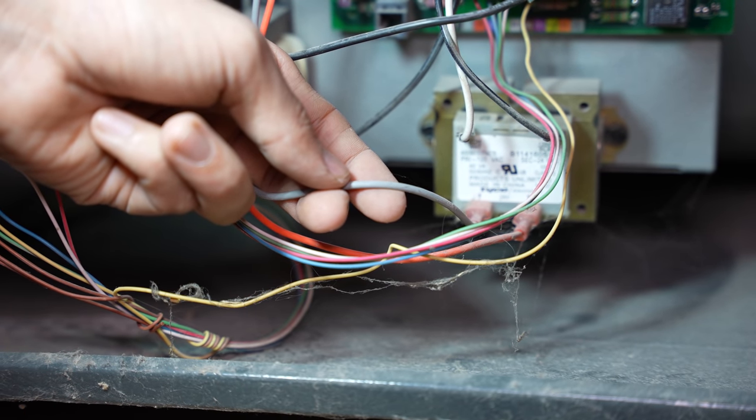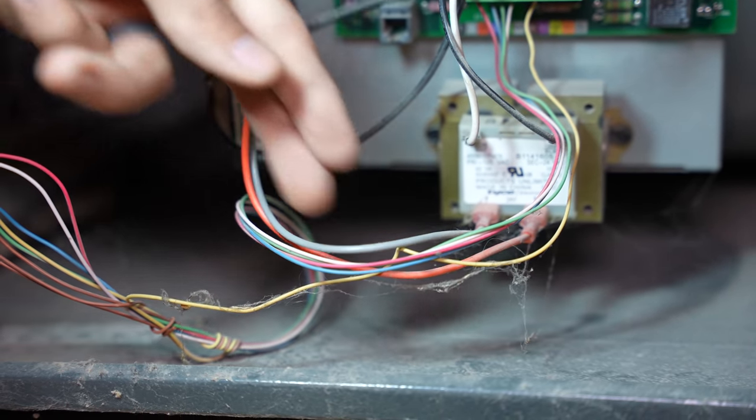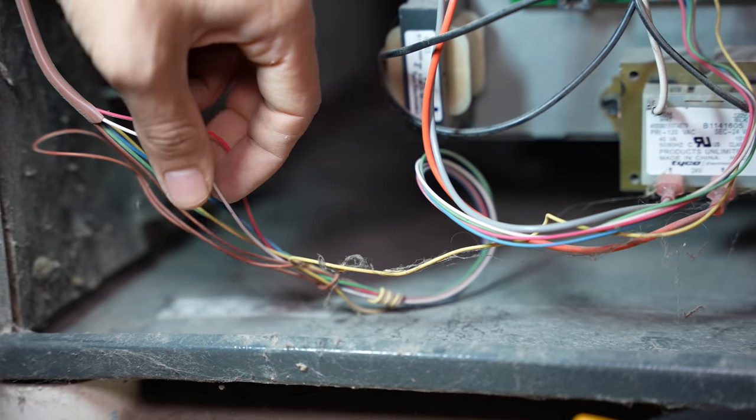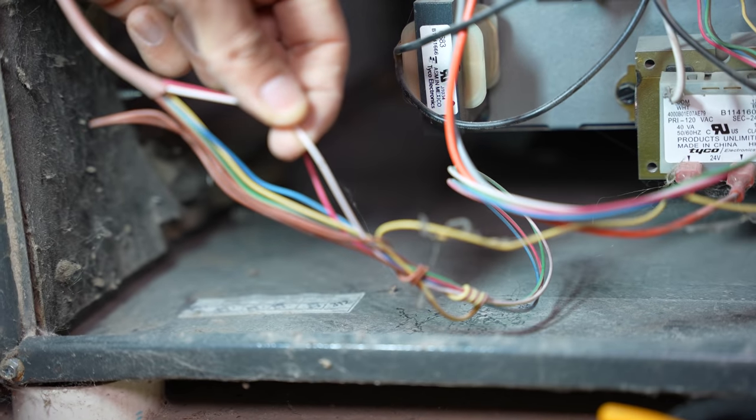So essentially, you're either tracing the 24 volt common coming from the transformer or the 24 volt common coming from the air conditioner and seeing where they end up.